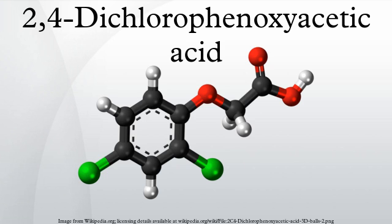Manufacture: 2,4-D is a member of the phenoxy family of herbicides. It is manufactured from chloroacetic acid and 2,4-dichlorophenol, which is itself produced by chlorination of phenol. Alternatively, it may be produced by the chlorination of phenoxyacetic acid. The production processes create several contaminants including isomers, monochlorophenol, and other polychlorophenols and their acids.